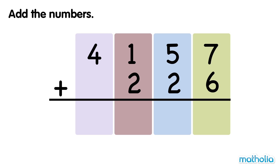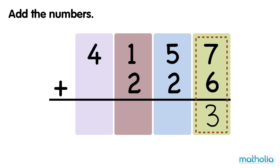Add the numbers. Let's find 4157 plus 226. Start by adding the ones. 7 ones plus 6 ones equals 13 ones. Let's regroup the 13 ones into 3 ones and 1 ten.